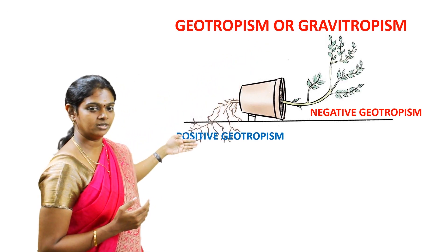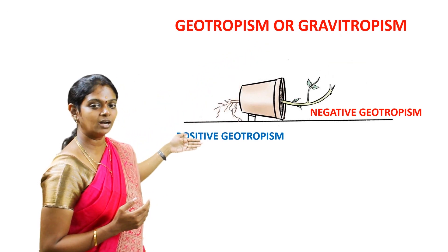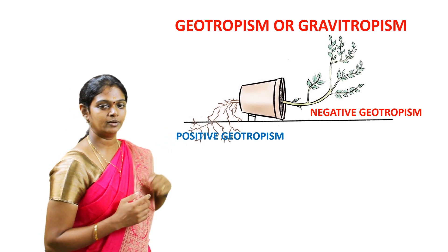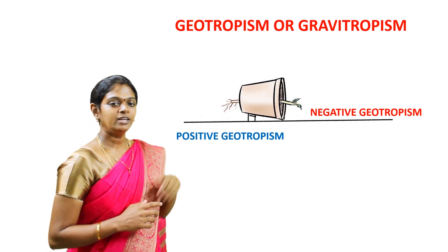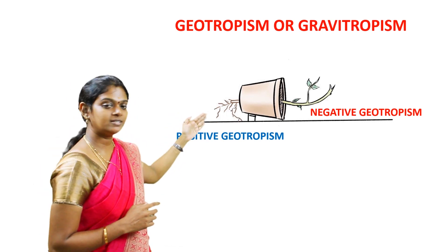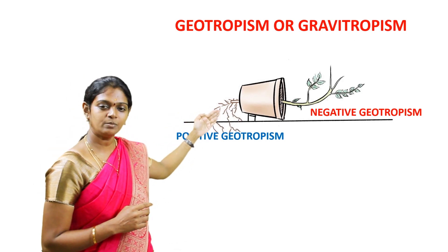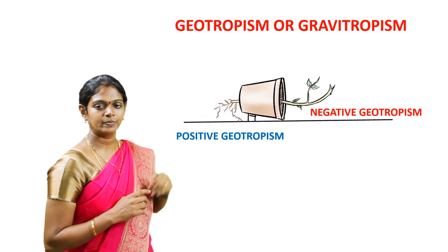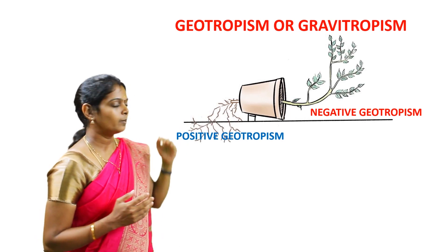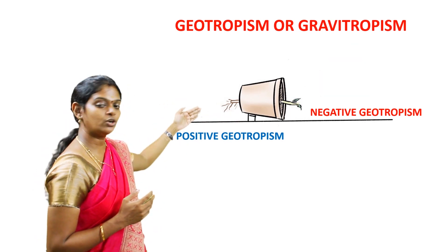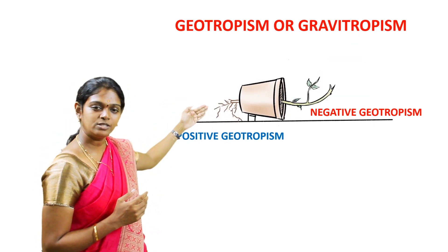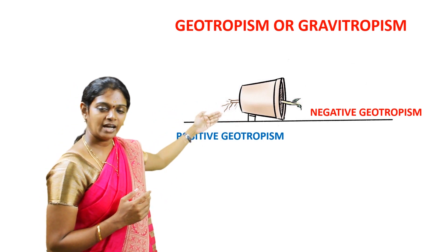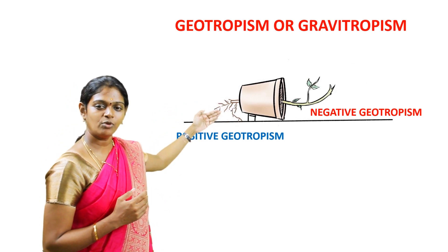The roots grow downwards towards the ground due to gravity. Here the stimulus is gravity, and so the root is positively geotropic. Gravity is the force of attraction towards the earth.